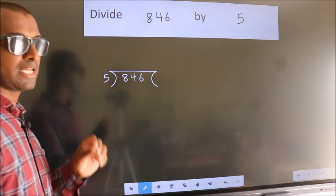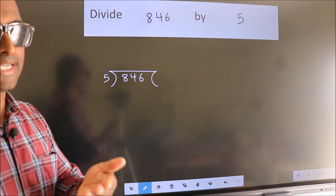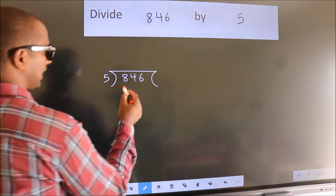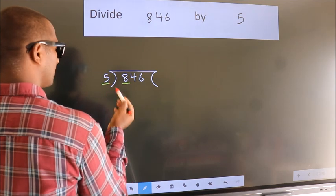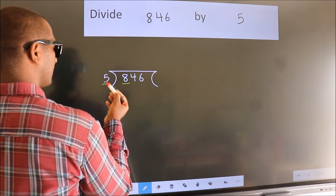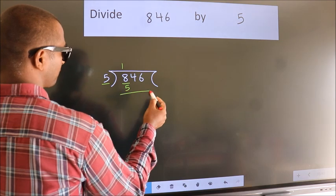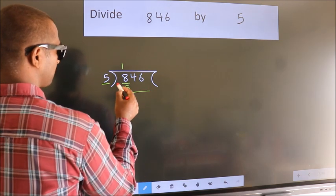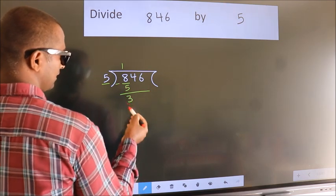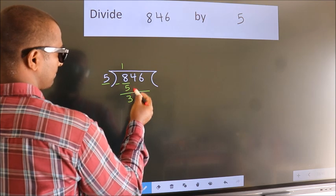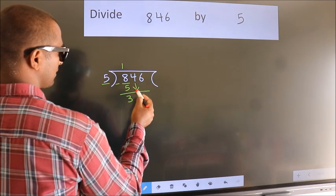This is your step 1. Next, here we have 8. A number close to 8 in the 5 table is 5 once 5. Now we should subtract, we get 3. After this, bring down the beside number, so 4 down, so 34.